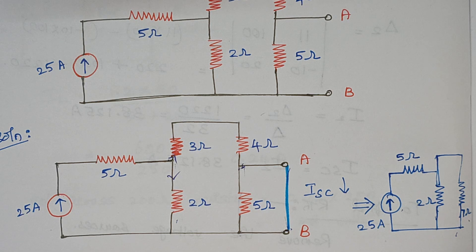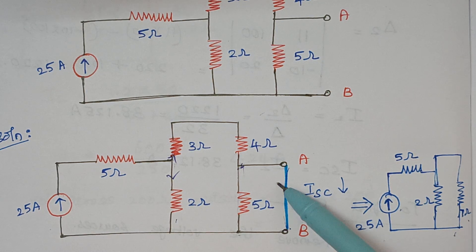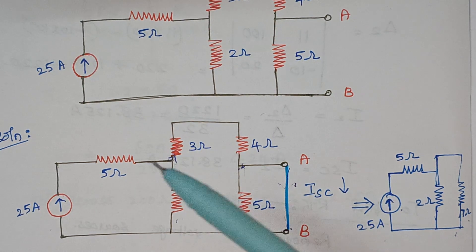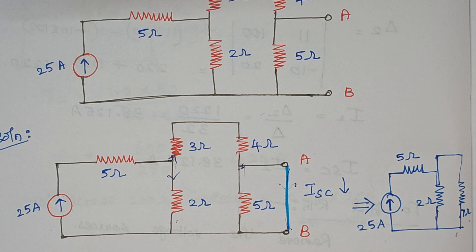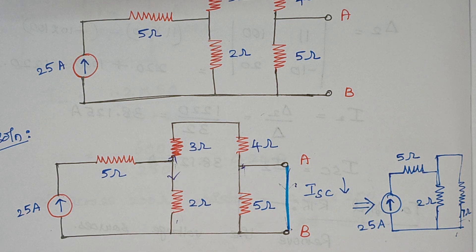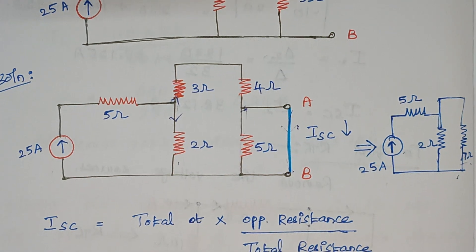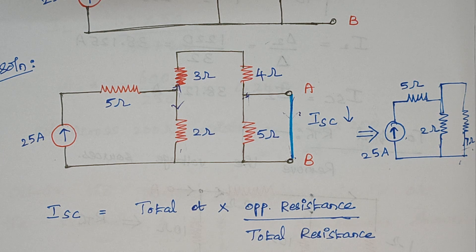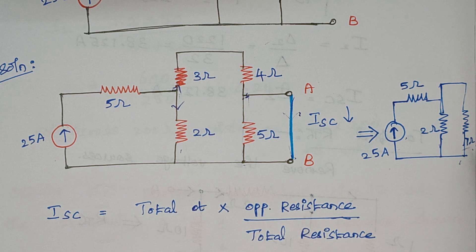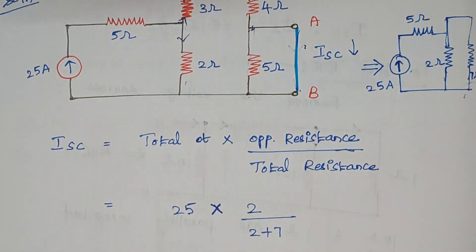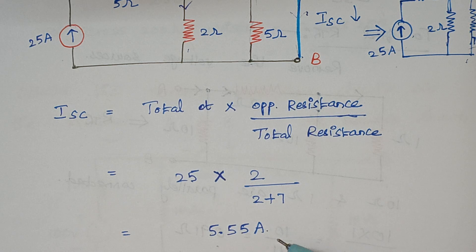Now what do we need to calculate? We need to calculate the current that flows through this short circuit path. This 3 ohm, 4 ohm and this short circuit path are all connected in series, so the current flow remains the same. When you calculate the current that flows through this 7 ohm resistor, it is the short circuit current that flows through terminal AB. Applying the current division formula — total current times opposite resistance divided by total resistance — total current is 25 amps, the resistance opposite to this 7 ohm is 2 ohm, divided by total resistance of 2 plus 7. So the answer is 5.55 amps.